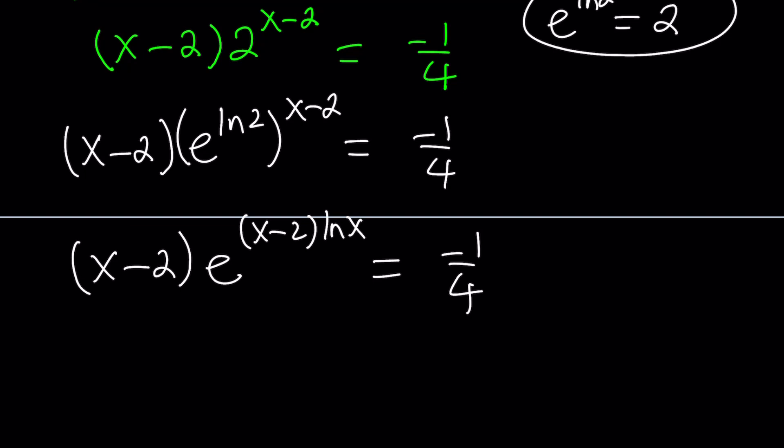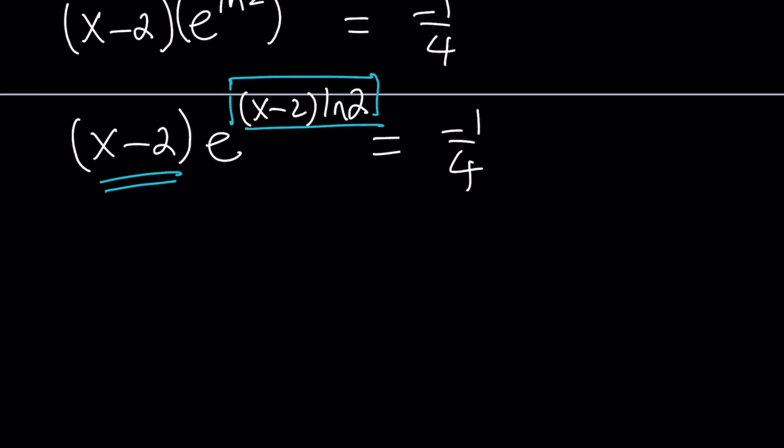x minus 2 times e to the power ln 2 to the power x minus 2 equals negative 1 fourth. We're going to multiply the exponents: x minus 2 times e to the power x minus 2 ln 2 equals negative 1 fourth. We're almost there. Notice that the exponent is x minus 2 ln 2, but the coefficient is x minus 2, so I must multiply both sides by ln 2 next. That gives us negative ln 2 divided by 4.